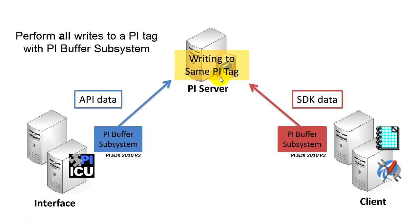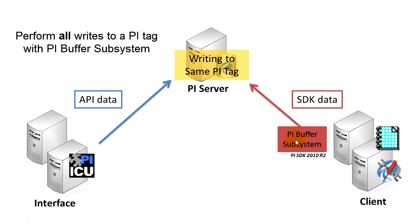Next, if you're writing to the same PI Tag from multiple different nodes, you'll need to be sure to do it with the PI Buffer subsystem on all nodes. If you're writing with the PI Buffer subsystem from one node but from another one you're not, you can possibly get into a point lock scenario, where the PI Server will grant a point lock for writing to that tag to the PI Buffer subsystem, and any other nodes that attempt to write to that tag will be denied access.